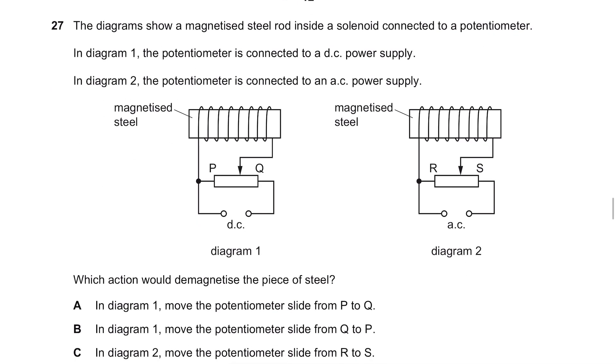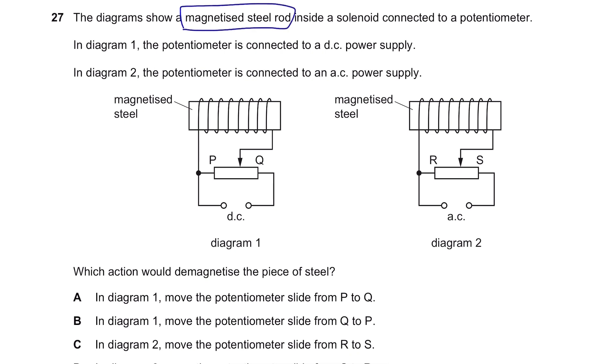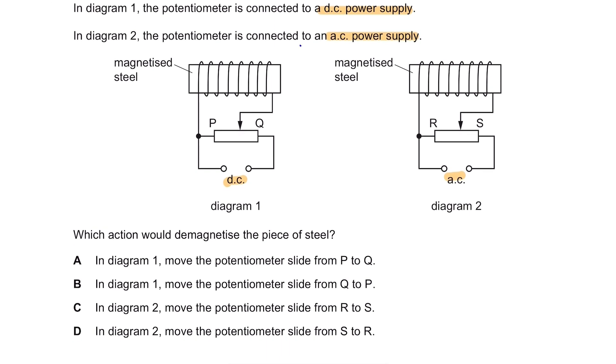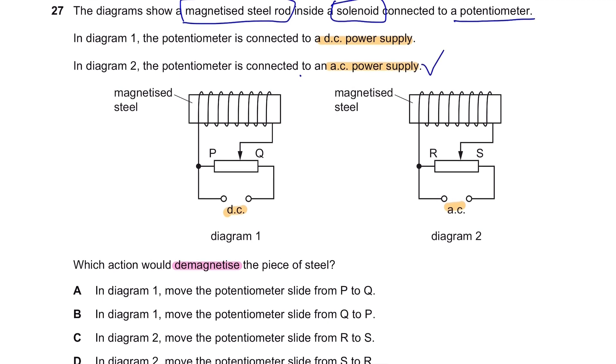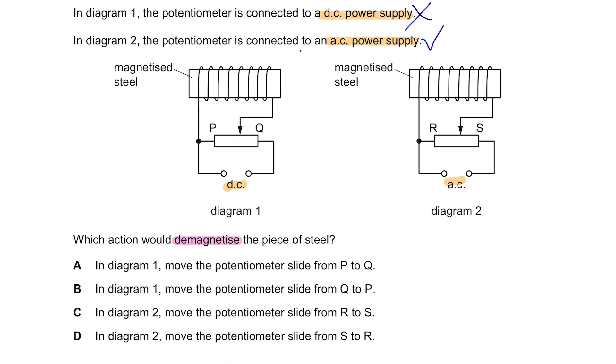Question 27. The diagram shows a magnetized steel rod inside the solenoid connected to a potential meter. In diagram 1, the potential meter is connected to a DC power supply. In diagram 2, it's an AC power supply. All right, then which action would demagnetize the piece of steel? Oh, there is a way of demagnetizing the piece of steel using an AC power supply, but you cannot do that using a DC power supply. Okay, so for this, the diagram 1 just doesn't work at all. And our options A and B are just out because we always need to use the AC supply.